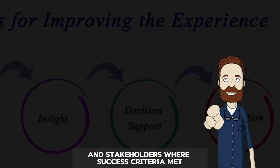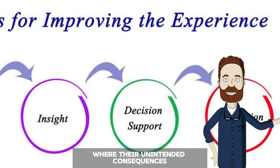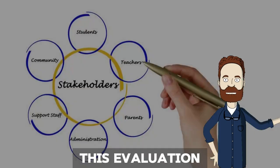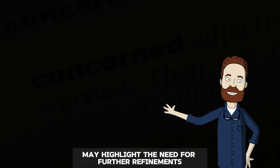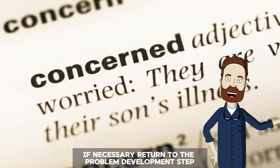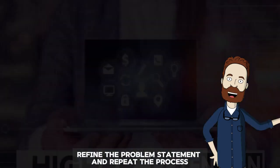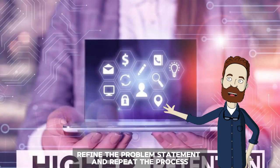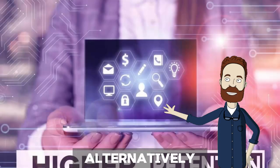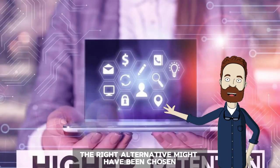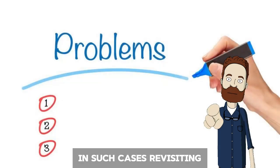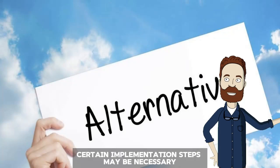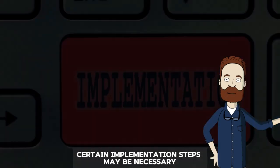Were success criteria met? Were there unintended consequences? This evaluation may highlight the need for further refinements. If necessary, return to the problem development step, refine the problem statement, and repeat the process. Alternatively, the right alternative might have been chosen, but poor implementation hindered success. In such cases, revisiting certain implementation steps may be necessary.